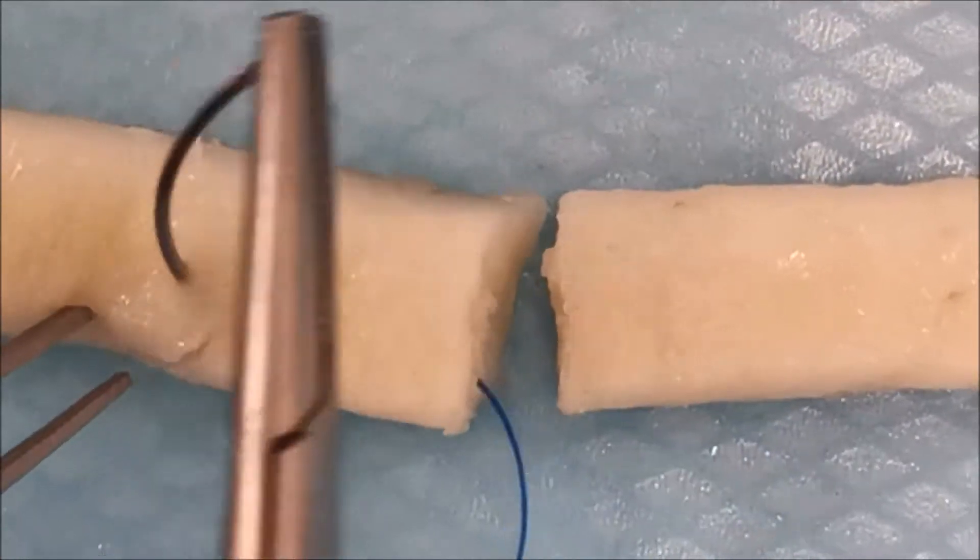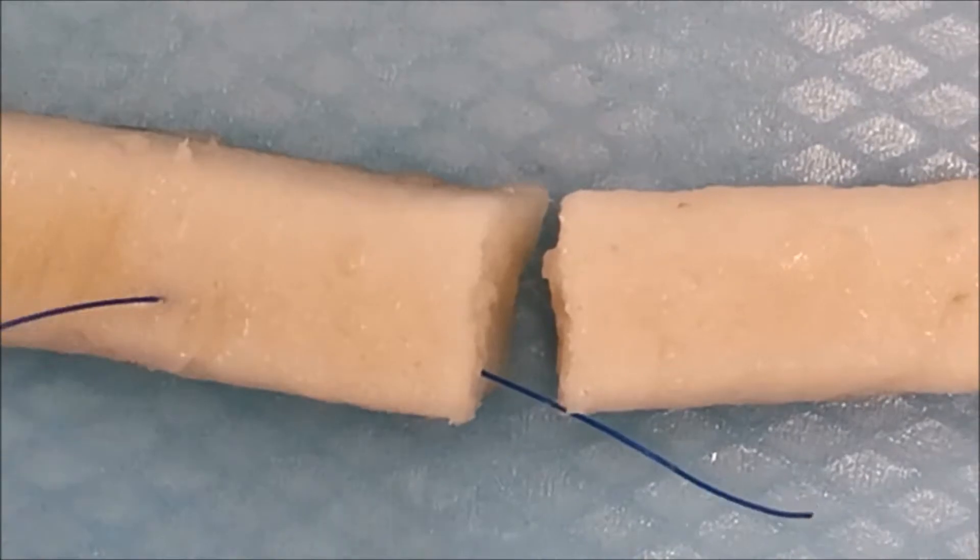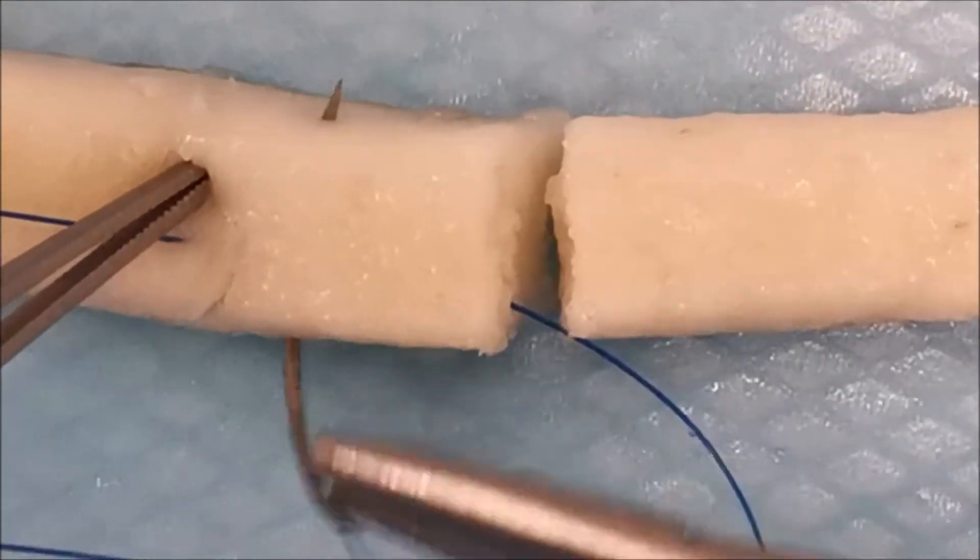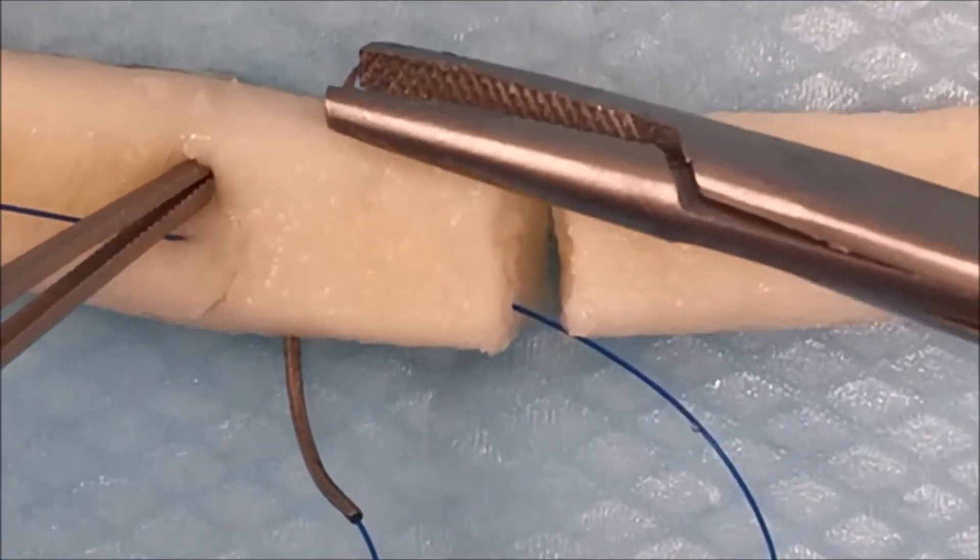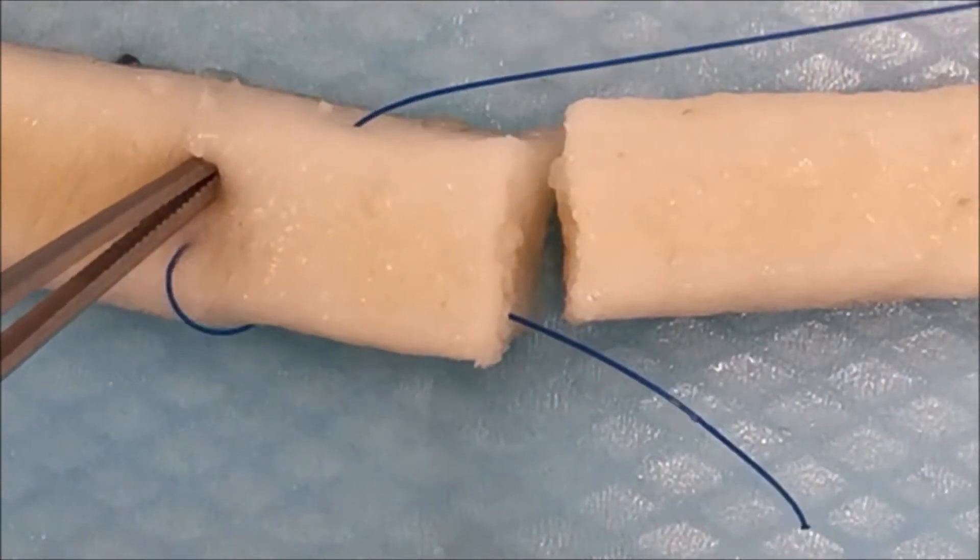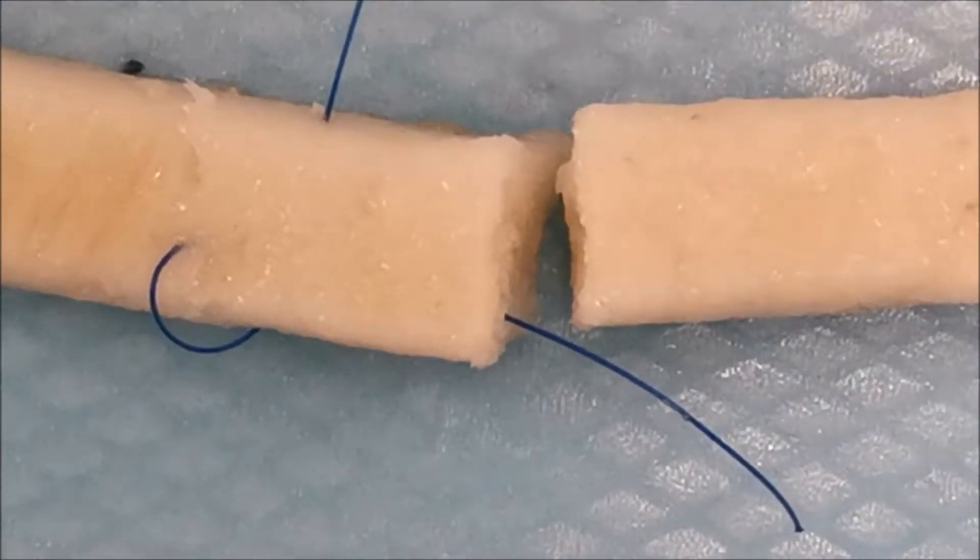Your first suture on your side is a straight longitudinal bite taking at least a centimeter if you can, followed by a transverse bite creating the first grasping loop.